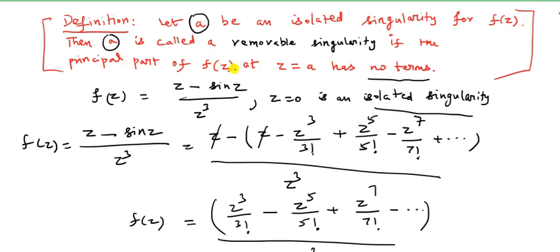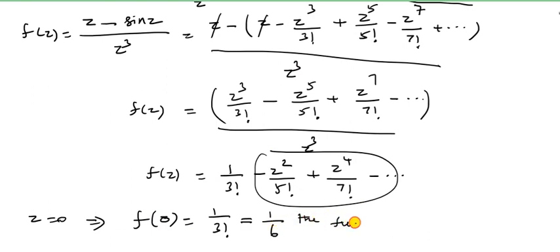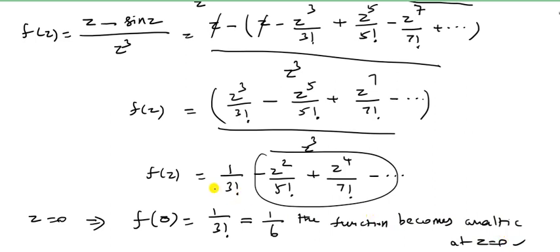If the principal part of f of z at z equal to 0 has no terms, then by definition f of 0 equals 1 by 3 factorial, which is 1 by 6. The function becomes analytic at z equal to 0, so z equal to 0 is a removable singularity.